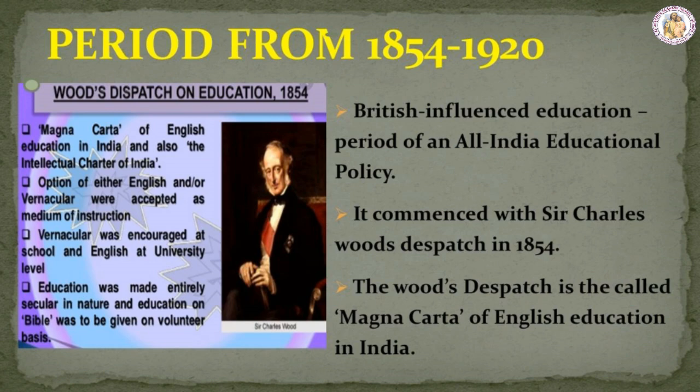Period from 1854 to 1920. The third phase of British influence on education may be called the period of an all-India educational policy. It commenced with Sir Charles Wood's Dispatch in 1854, which is called the Magna Carta of English education in India, because it was the first declaration of British education policy for educating the masses at all levels. However, it resulted in complete state control on education, diverging it from Indian ideals and culture.